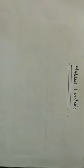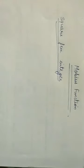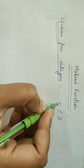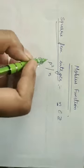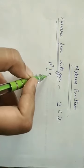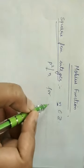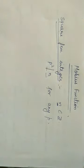Good morning students. Today our topic of discussion is the Möbius function. Before defining this function, we'll discuss one thing: square-free integers. An integer n is said to be a square-free integer if there doesn't exist any prime p such that p-squared divides n. That is, p-squared does not divide n for any prime p. Such a number is called a square-free number.